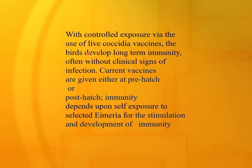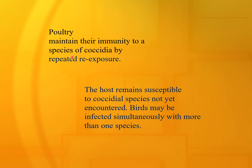With controlled exposure via live coccidial vaccines, birds develop longer-term immunity, often without clinical signs of infection. Current vaccines are given either pre-hatch or post-hatch, in ovo at 18 or 19 days. Post-hatch immunity depends upon self-exposure to selected Eimeria for stimulation and development of immunity. Birds maintain immunity to coccidial species by repeated re-exposure. The host remains susceptible to coccidial species not yet in controlled immunity. Birds may be infected simultaneously with more than one species.